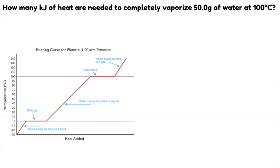Completely vaporizing water at 100 degrees Celsius means your substance is at the start of vaporizing — at 100 degrees Celsius, which is 100% liquid and 0% gas. What you want to get is 0% liquid and 100% gas. As you can see, this is a plateau, so we're going to use the molar heat of vaporization.